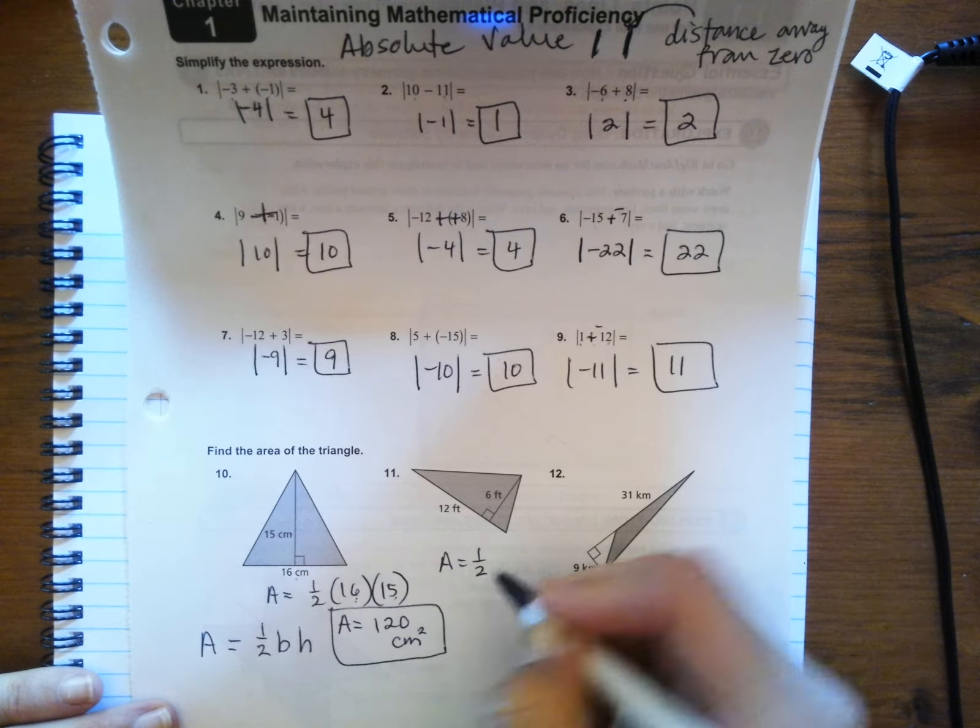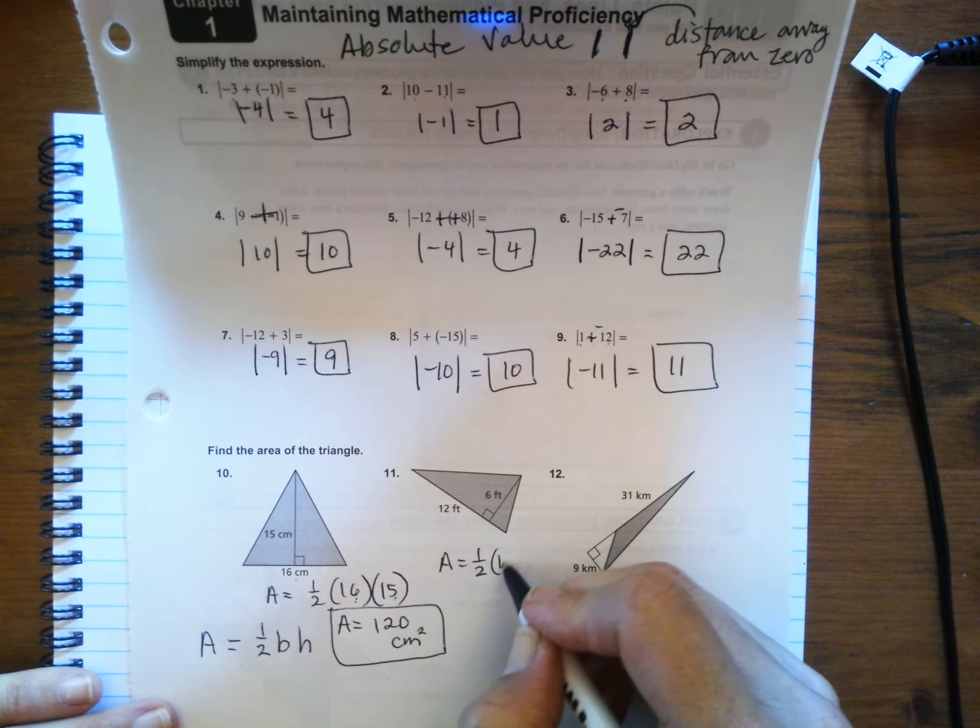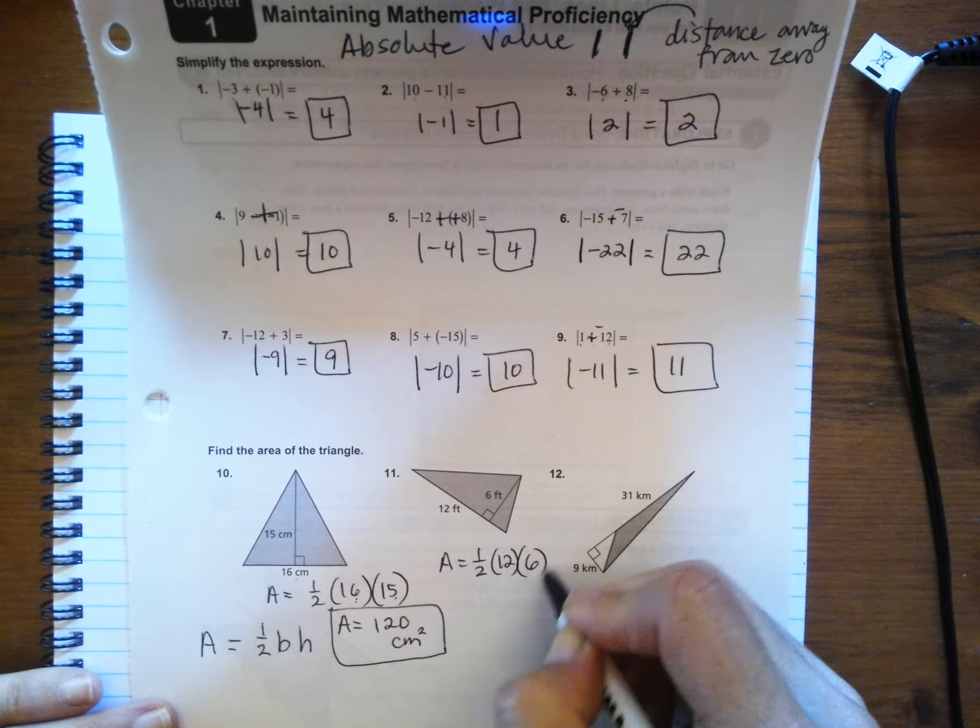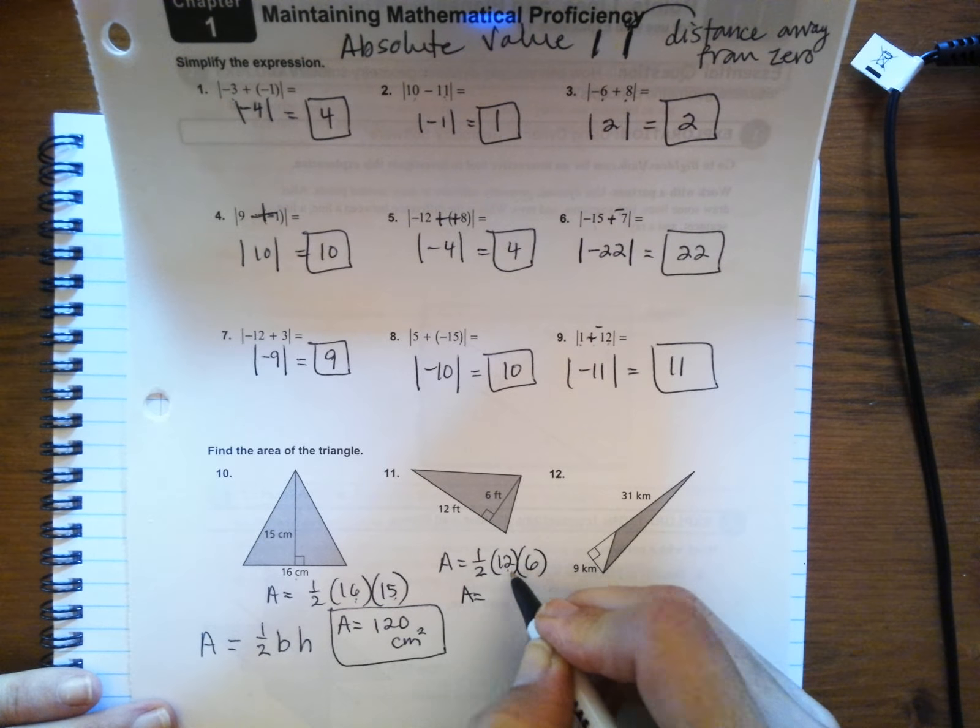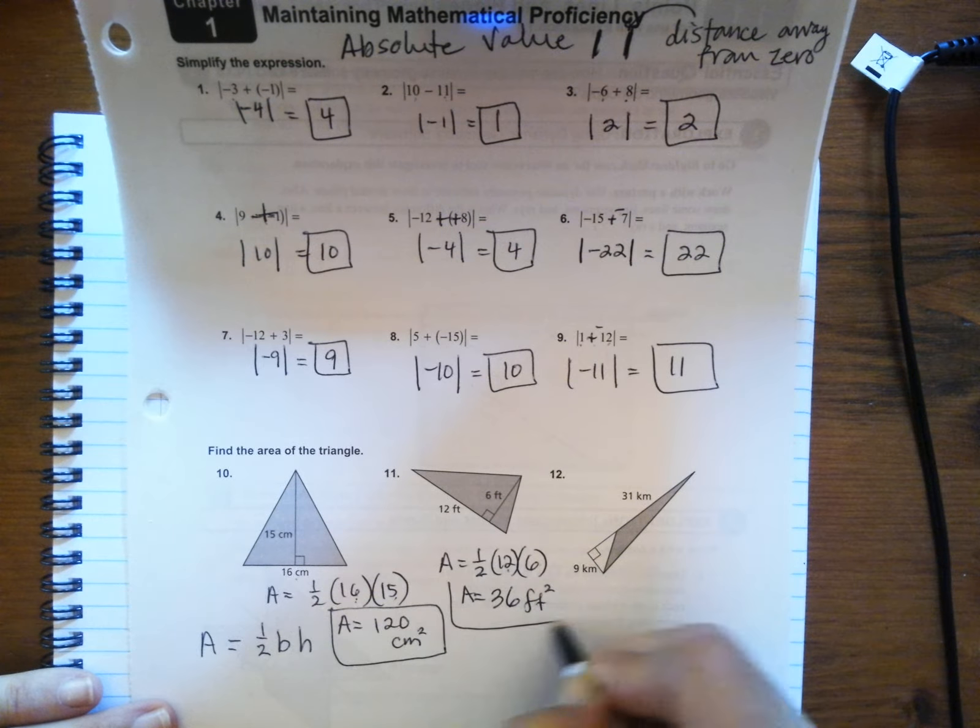Number 11. Base is 12, height is 6. Half of 12 is 6. 6 times 6 is 36, and those are feet. I multiplied twice, so that's squared.